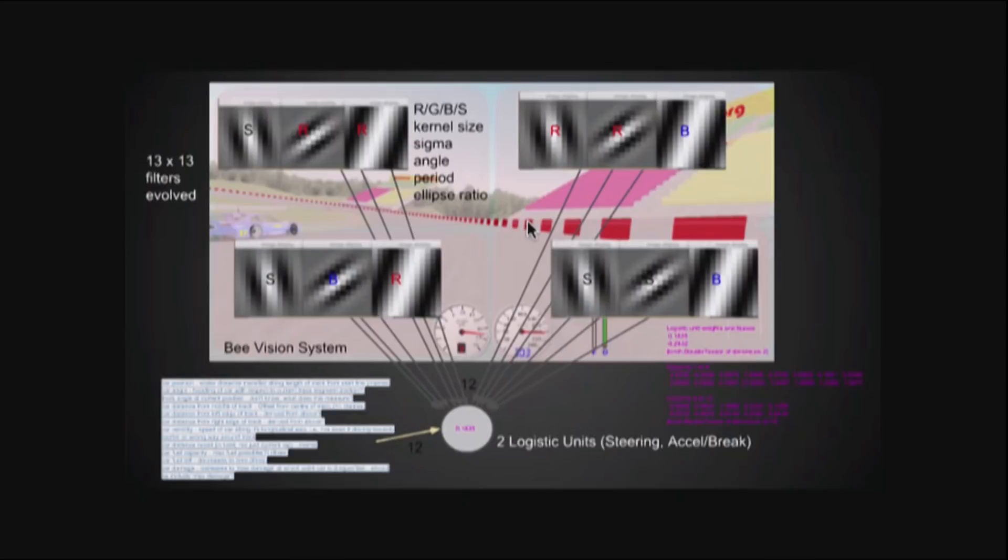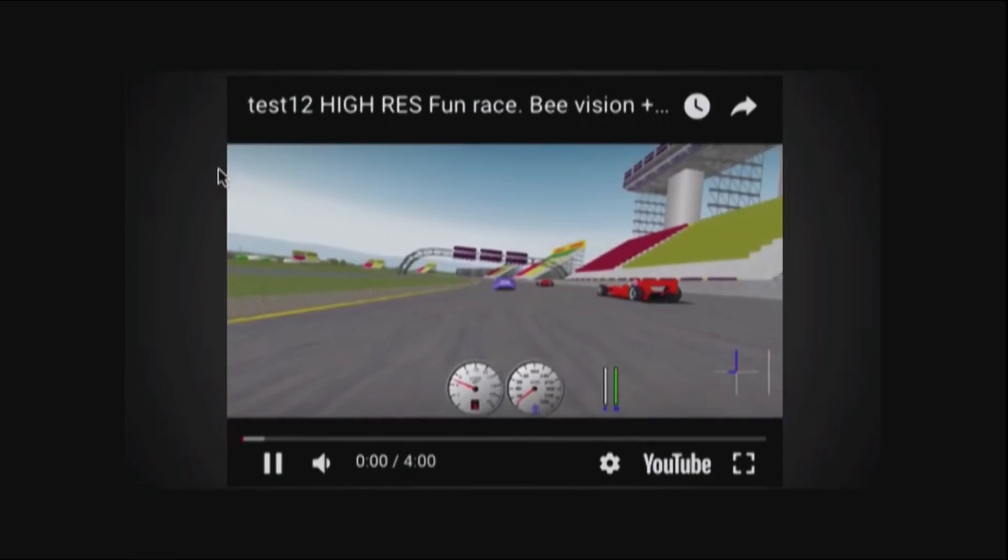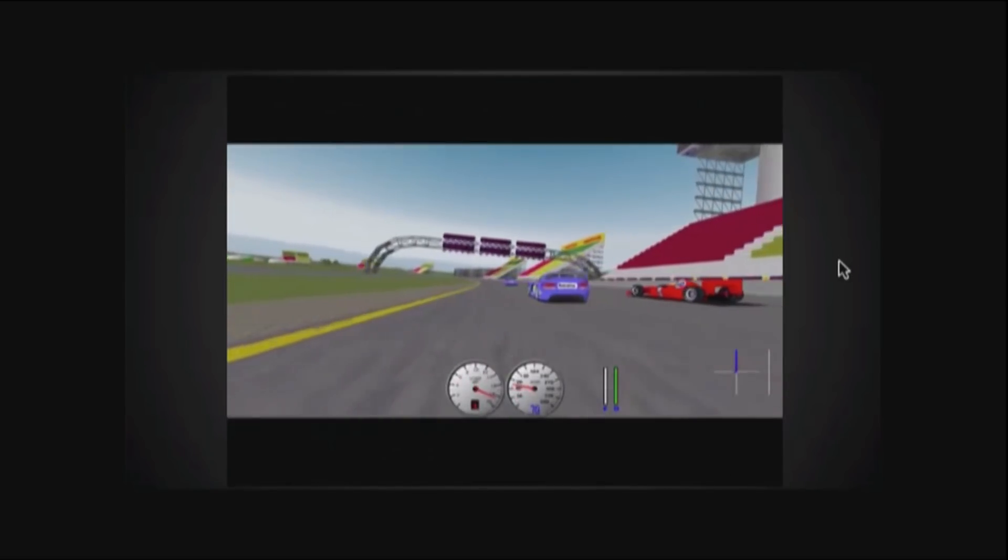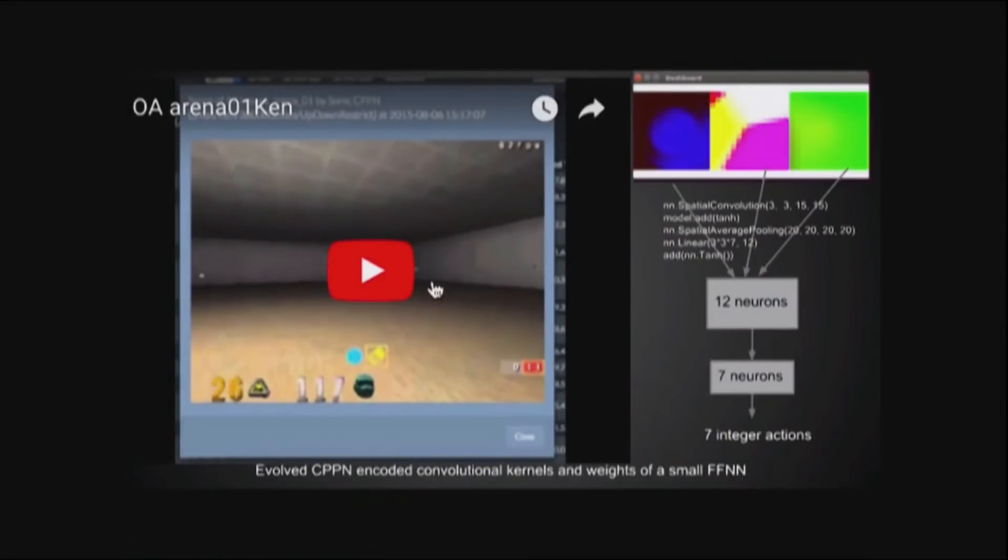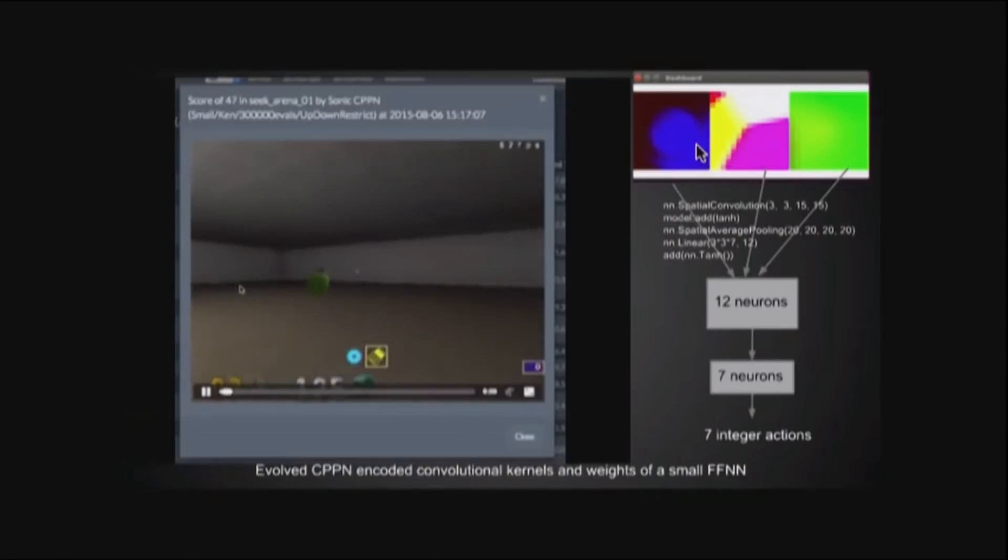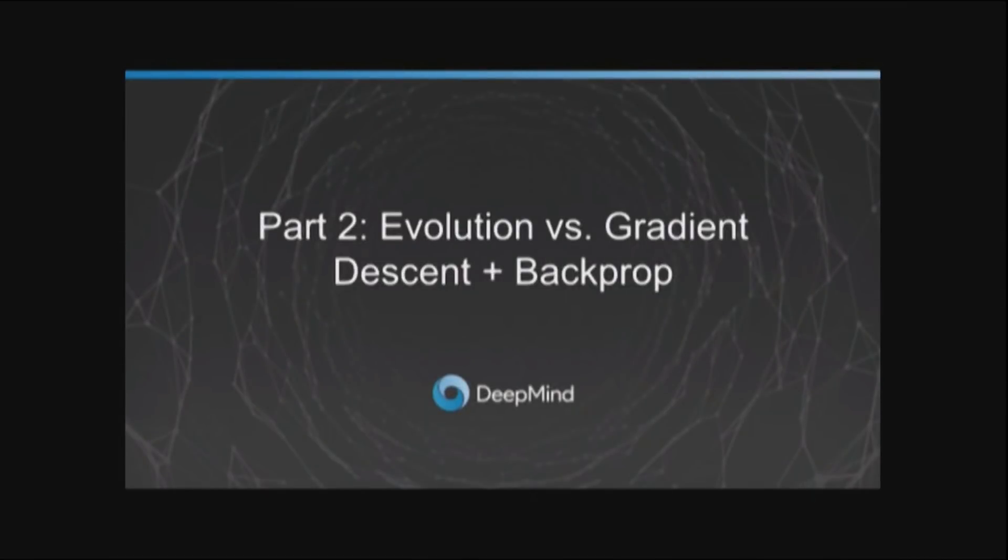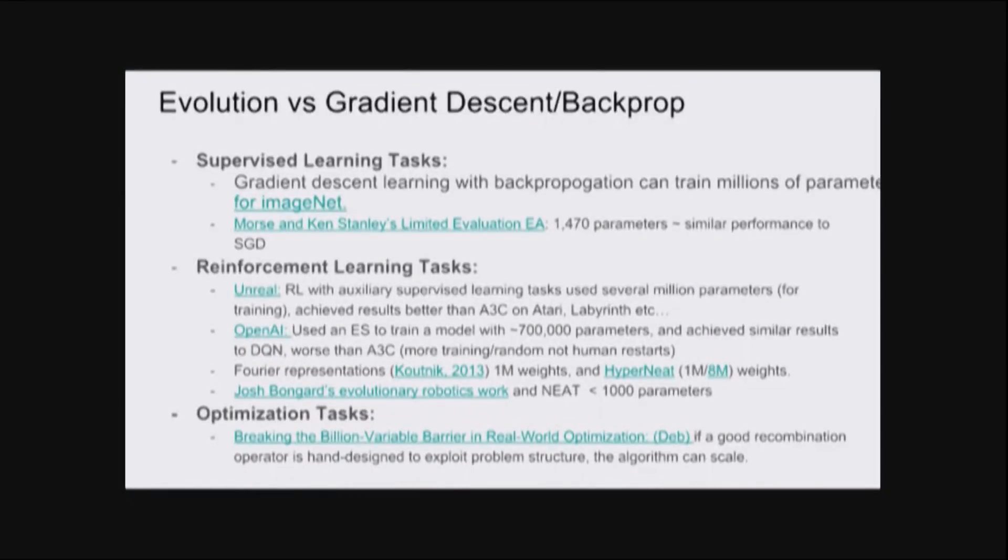We evolved small neural networks with structured visual filters. This is actually just two logistic units to do very good driving on tracks. So you can do tracks basically with two neurons. And evolution is very good for that sort of thing. Moving around in a three-dimensional world, we use CPPNs to encode receptive fields with small numbers of parameters and a handful of neurons.